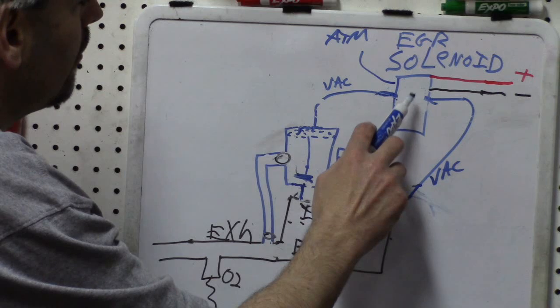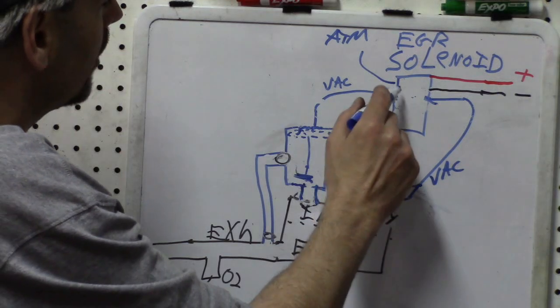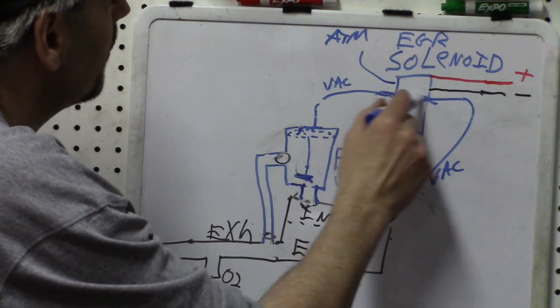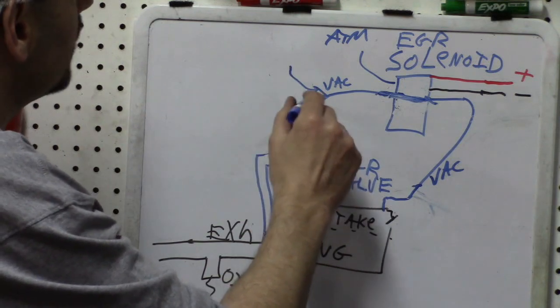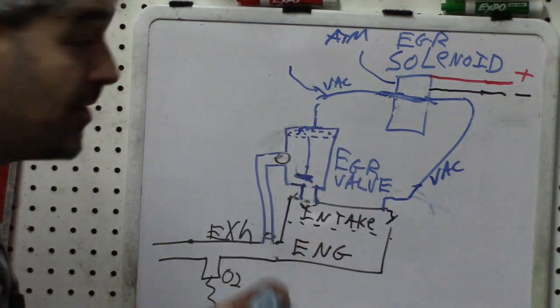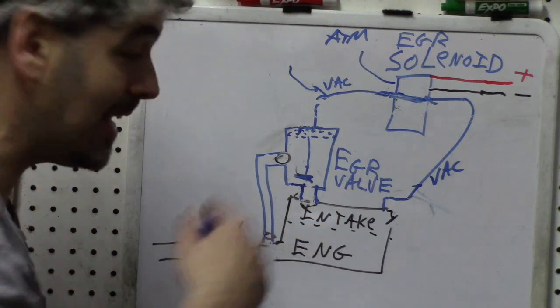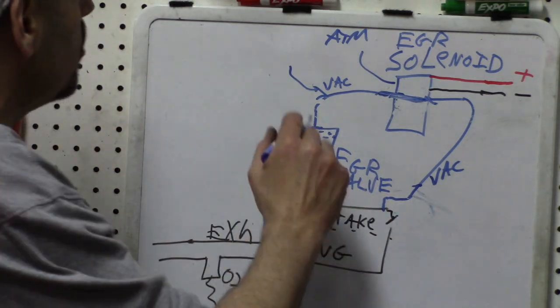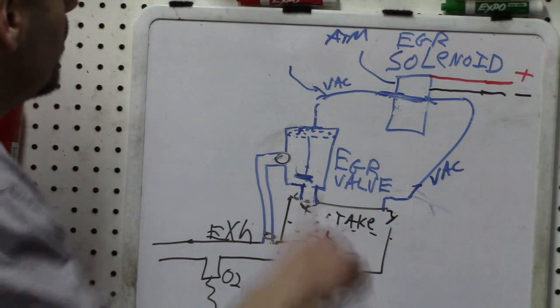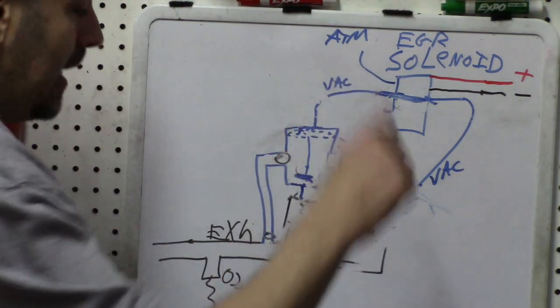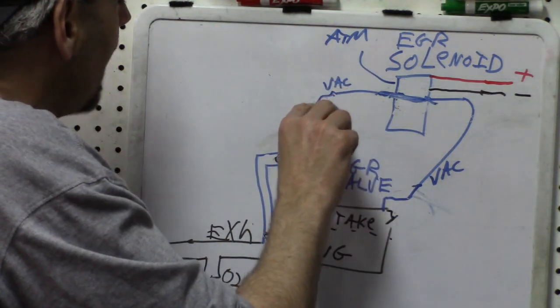Obviously, you could have an open at this vacuum line from the solenoid to the valve. When the EGR valve is commanded open, the solenoid opens. Then, of course, you would have a vacuum leak here, which would lean your condition out during time when the EGR valve was supposed to be open, but you wouldn't get EGR activity. So that could be a problem. Any number of these issues with your vacuum lines.